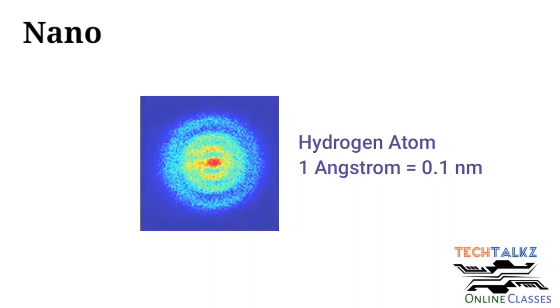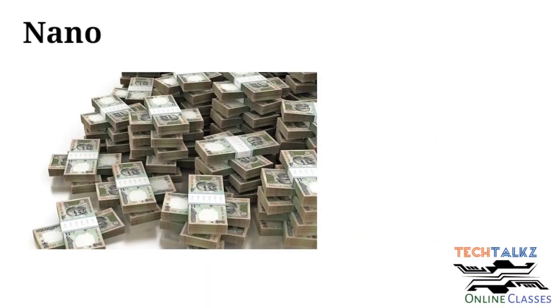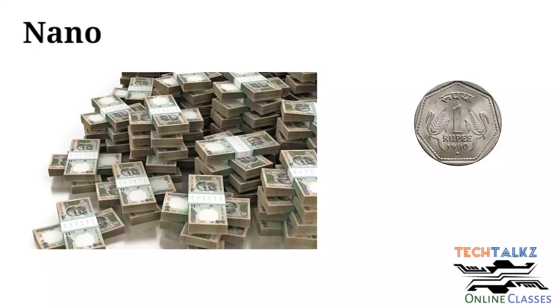For understanding purposes, we can take another simple example. If someone asks you what is nano, then you can tell them it is equal to 1 rupee in 100 crore rupees. So here, the 1 rupee is nano - 1 rupee in 100 crores. There is a scale difference. And now you can understand how small the nano is, and materials with small dimensions.